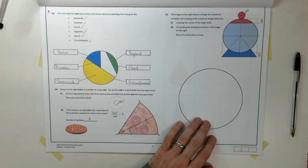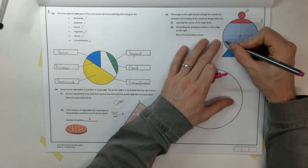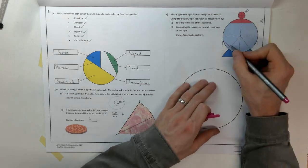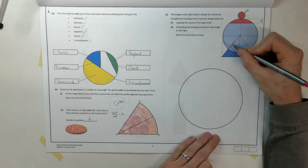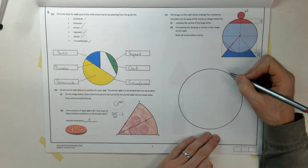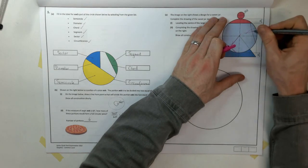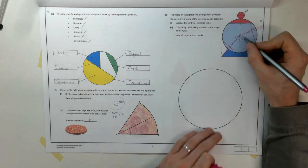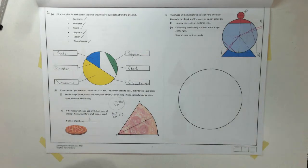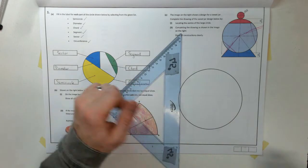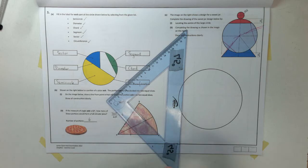There's a construction for locating the centre of a circle. If I draw a chord, so any random chord, and if I bisect that chord, that bisecting line will run through the middle of my circle. If I draw another random chord here, and if I bisect that chord, that will also run through the middle of my circle. So, that's going to help me to locate the centre of that circle.